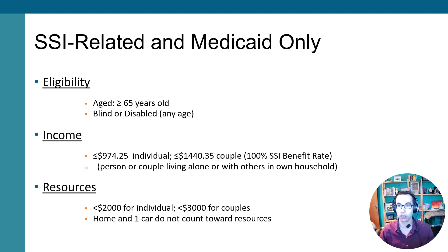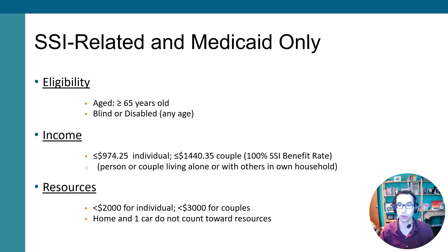There is an identical door called Medicaid Only, for people who meet all of the SSI criteria but do not receive the cash benefit. To specify: somebody has to be 65 years old or older, blind or disabled as determined by the Social Security Administration or New Jersey's state medical review team, and have income in 2024 less than $974.25 per month for an individual or $1,440.35 per month for a couple. Resources — meaning money in the bank, stocks, bonds, retirement savings — must be worth less than $2,000 for an individual or $3,000 for couples. A home and a single car do not count toward those resource limits.